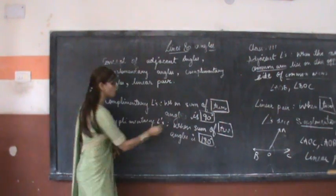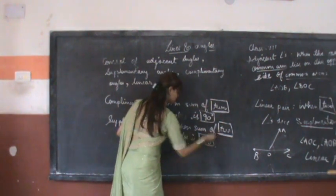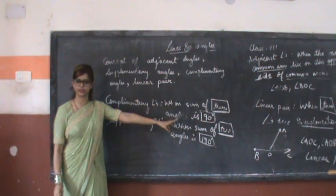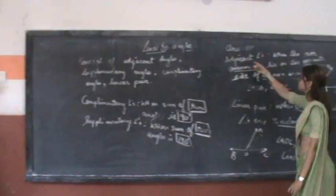Then what are supplementary angles? When sum of two angles is 180 degrees. Again, we have to make sure that only two angles are there. We are going to jump to the concept of adjacent angles.